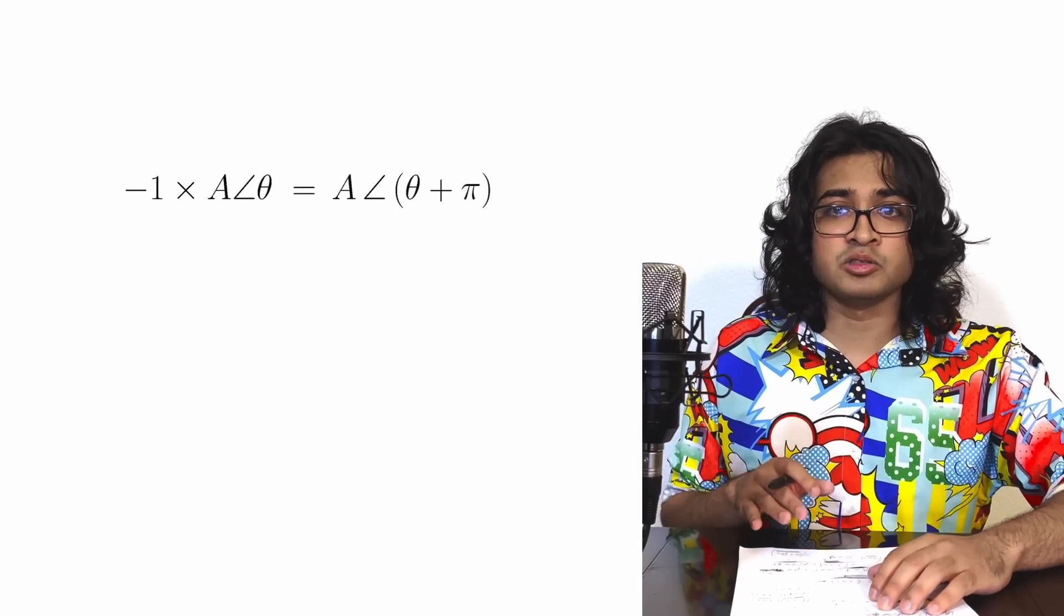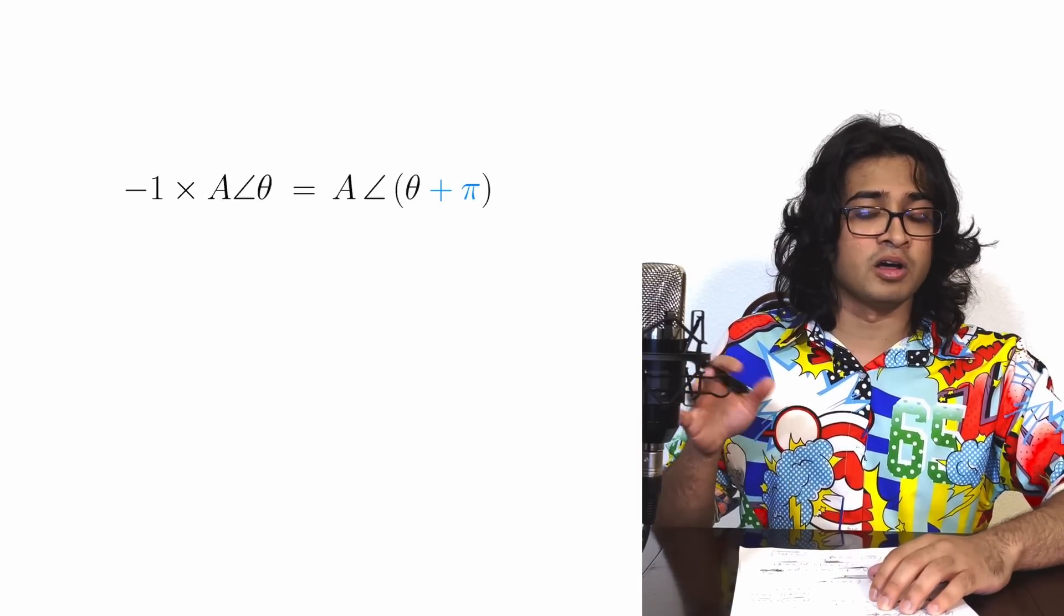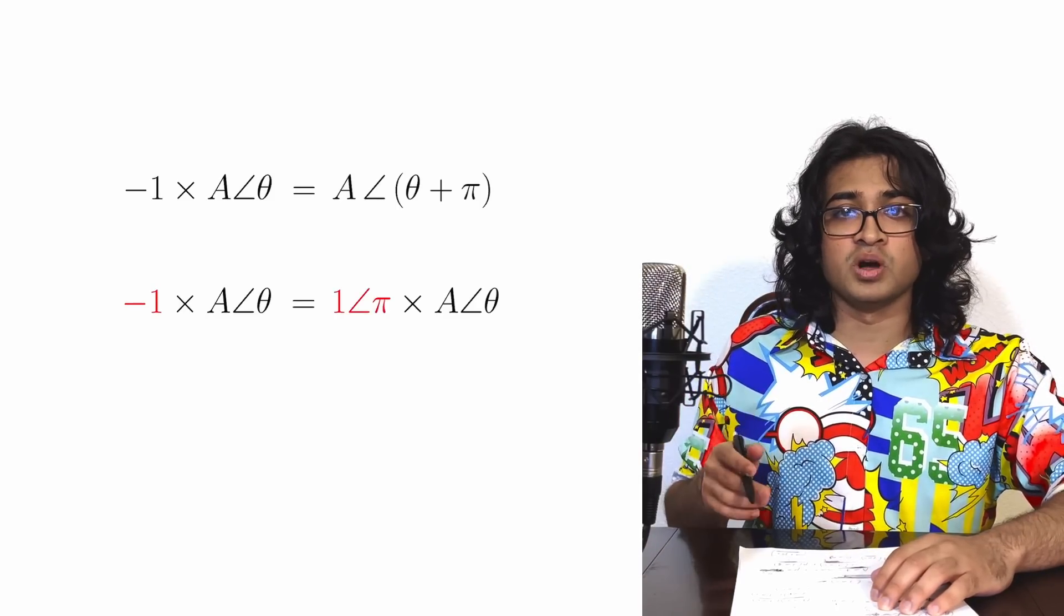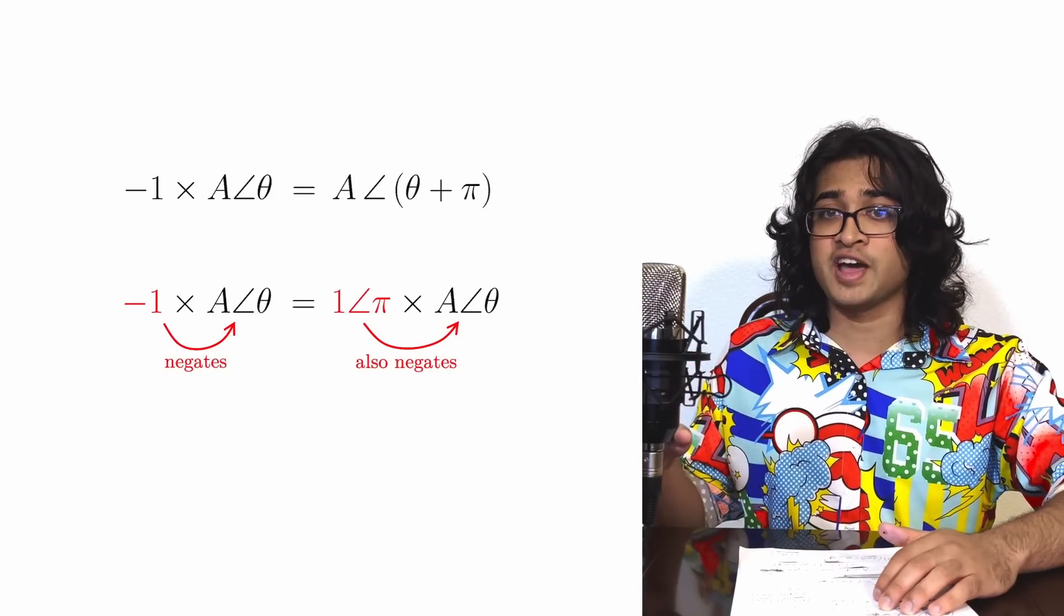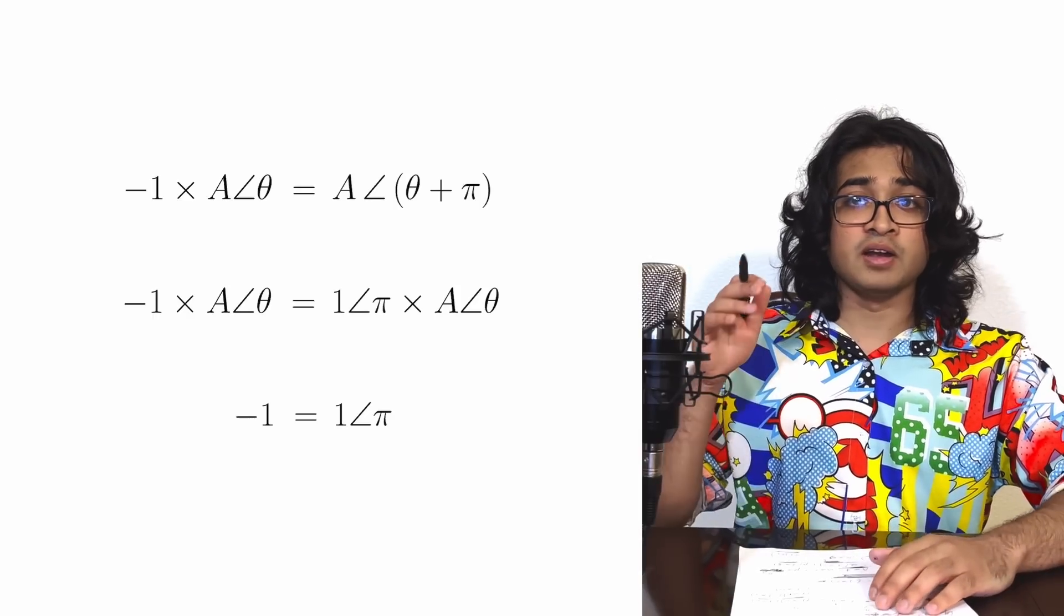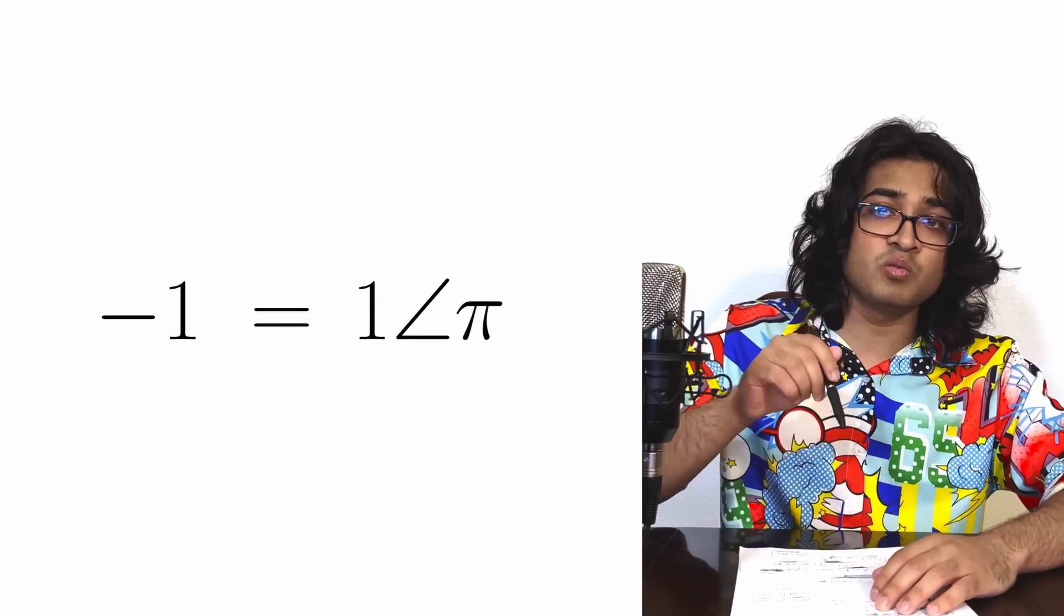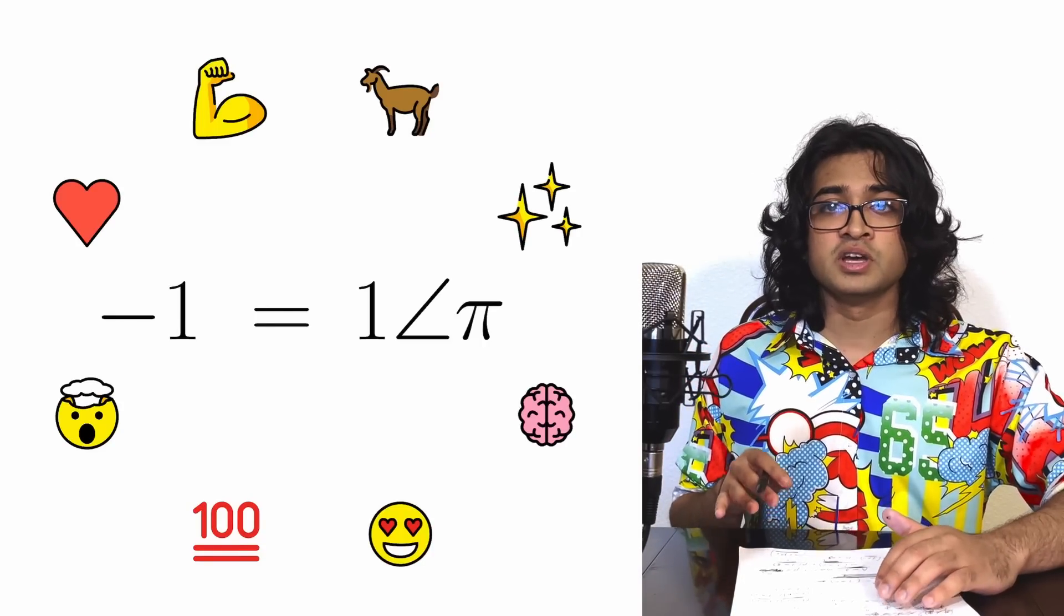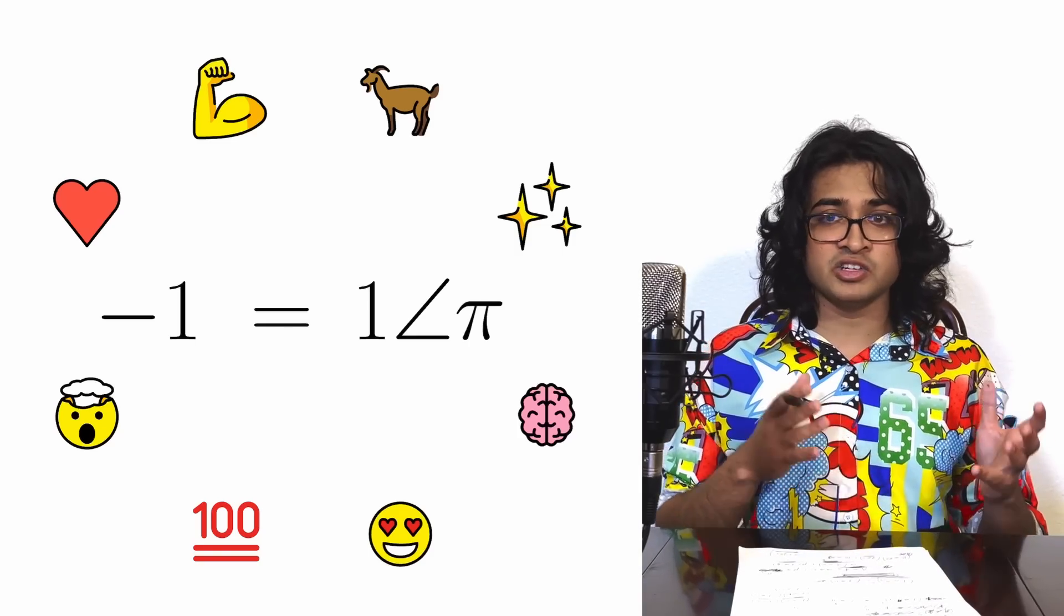Let's factor out the rotation by pi radians on the right hand side of the equation. Now, since the real number negative 1 and the polar object 1 angle pi both have the same effect on A angle theta, they must be the same thing. And honestly, that right there is really what makes the complex numbers special. It's not about square roots, it's about the connection between negation and rotation.